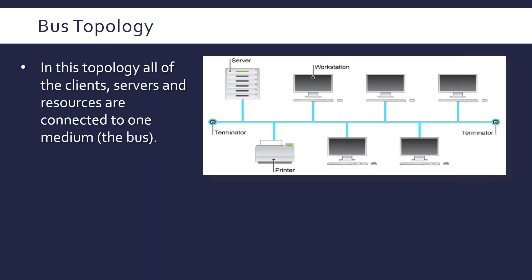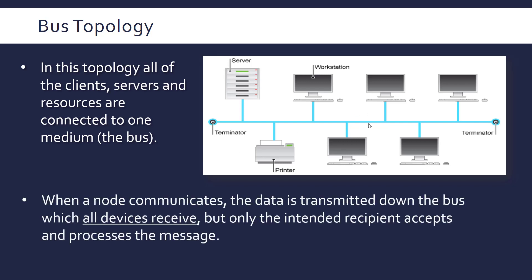The bus topology looks like this. In reality networks don't look this neat, but the idea is that for the bus there is a single wire which all the devices connect to, whereas for the star it's a single device all the devices connect to. This single wire is the bus in the name. So when a device wants to communicate, the data is transmitted down the bus.